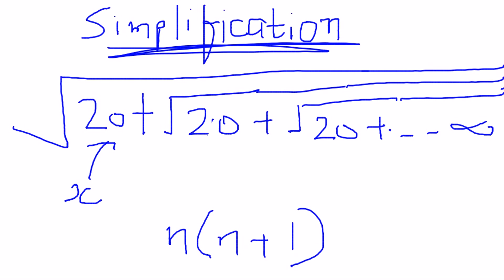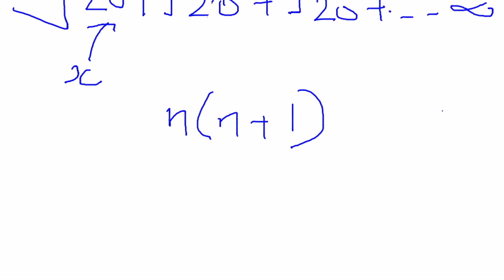Now as x was 20, what would be n and n plus 1? It would simply be 4 times 4 plus 1, because 4 times 4 plus 1 would be 4 times 5, and that's equivalent to 20.